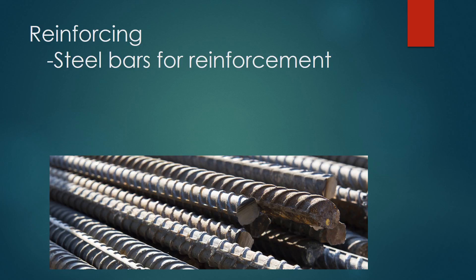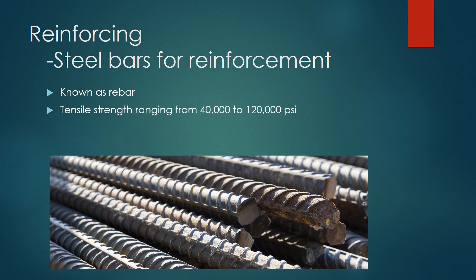Steel bars for reinforcement are also known as rebar. Sizes or diameters come in 1/8-inch intervals. Bars are made to ASTM standards, ranging from 40,000 to 120,000 psi. Corrosion-resistant bars can be used in areas where there are lots of salts present. Woven wire fabric can also be used as an alternative to save on labor, usually used in slab construction.